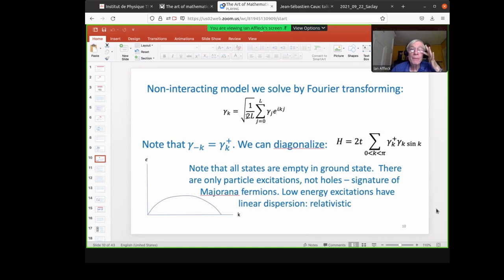So not interacting model, we can solve by Fourier transforming. So we can define gamma K to be square root of one over 2L sum over J from zero to L gamma J e to the iKJ. So notice that gamma K is not Hermitian, even though gamma J is. But notice that gamma minus K is gamma K dagger. So we can actually restrict ourselves to positive K. Then we can diagonalize for the non-interacting case. And we find the Hamiltonian becomes just 2T sum over K from zero to pi, gamma K dagger, gamma K sine K. And notice that all states are empty in the ground state. So the only particle excitation is not holes. This is a signature of Majorana fermions in the Lorentzian invariant model. So low energy excitations have linear dispersion and they're relativistic.